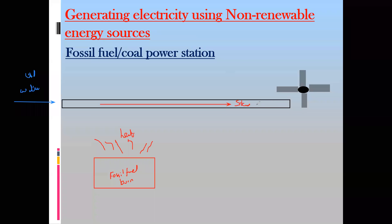When the steam particles collide with the turbine they rotate it. This turbine is connected to a generator which has a coil; when the coil rotates it produces electricity. So burning fuel produces heat energy, that heat energy is absorbed by water which converts into steam, that steam rotates the turbine, and the turbine is connected to a generator which produces electricity.